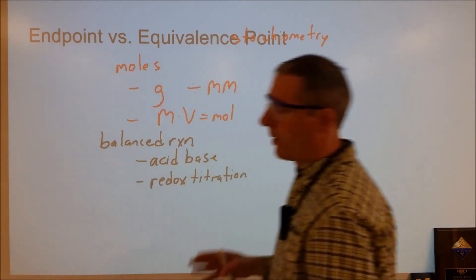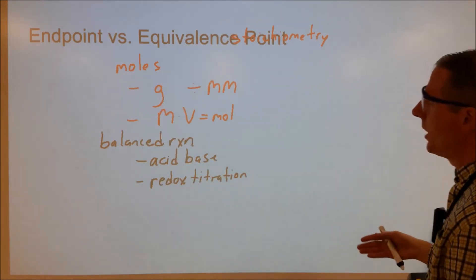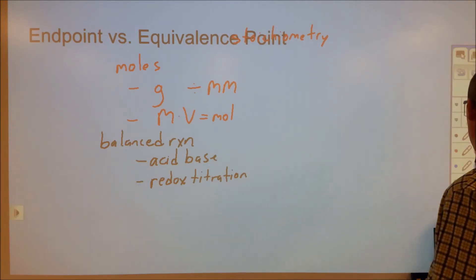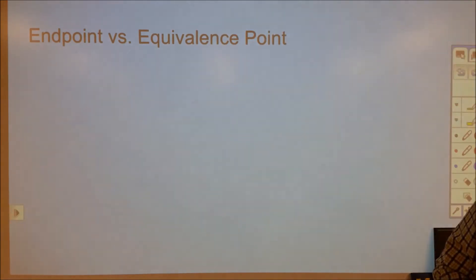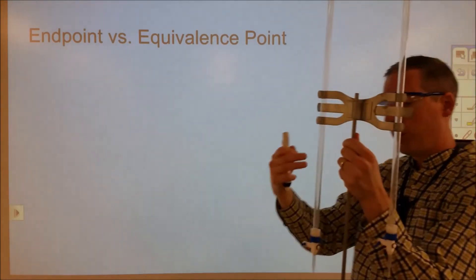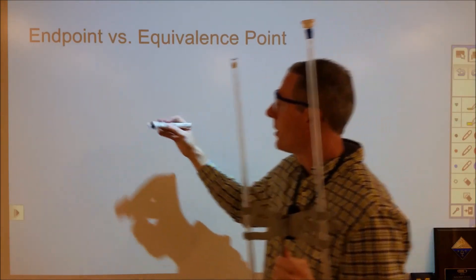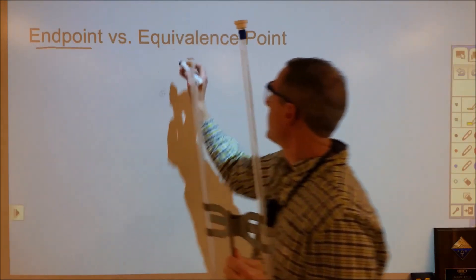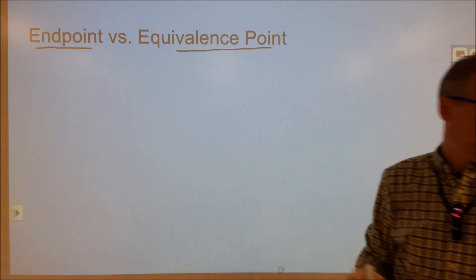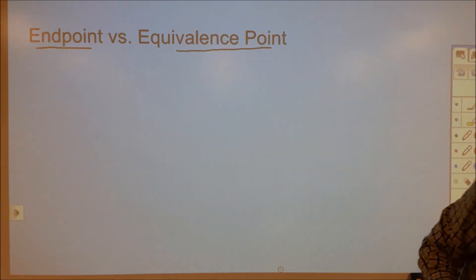So as you're doing this, one of the things you need to keep in mind in titration is what you're looking for. You're putting your chemical in here and you're adding it to the solution until you get to what's called the endpoint. And that is different than the equivalence point, which is what we're going to calculate. So ideally you want those two to be as close as possible.